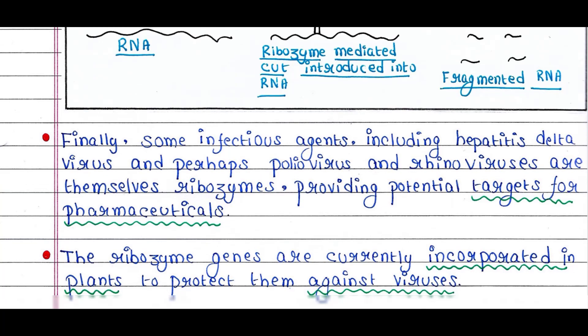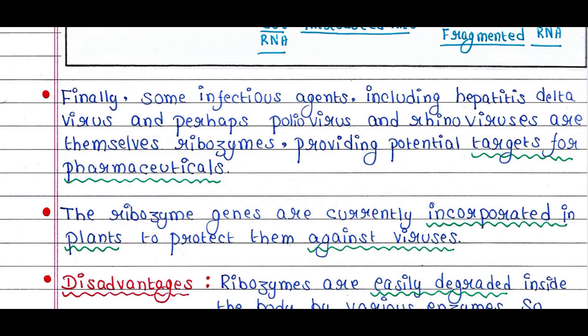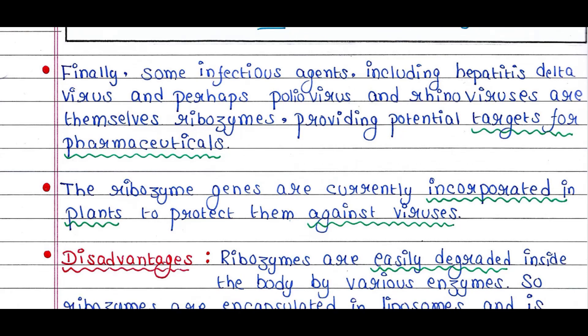Ribozyme genes are currently incorporated in plants to protect them against viruses. We can make transgenic plants by introducing the ribozyme gene, which makes them virus resistant.